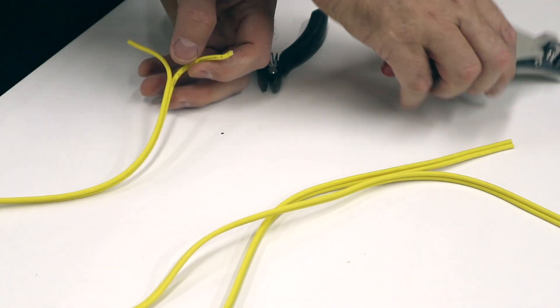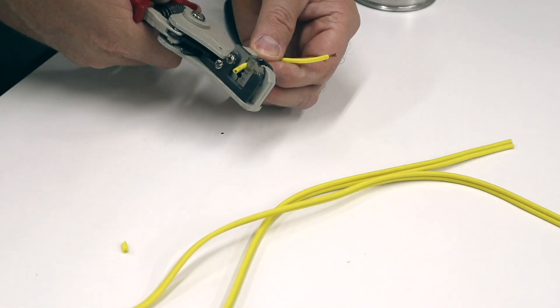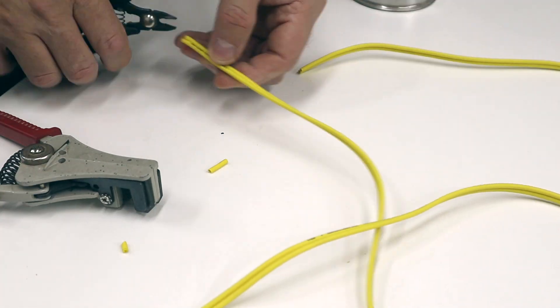To connect the speaker and power wires proceed as follows. Strip the ends of all the wires and twist all the ground wires together.